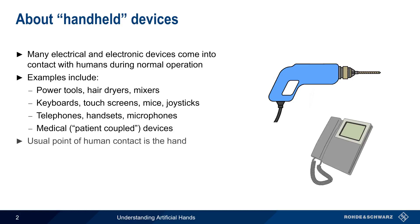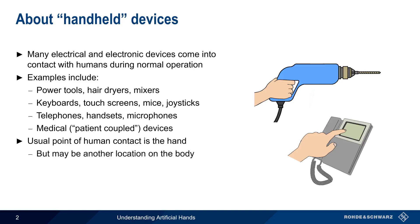In most cases, the usual point of contact is the human hand, but contact with other parts of the body is also possible. In addition, there may be multiple points of contact — for example, a drill or other tool that's normally held with two hands.